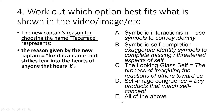Because A is not shown, we can discount E at the same time, since that's 'all of the above'. So it's now down between B, C, and D. Symbolic self-completion — exaggerated identity symbols to complete missing or threatened aspects of the self — well, in the section of the video we're shown, Taserface doesn't talk about his identity being threatened or something missing. He talks about what he wants to convey to others, and that is fear.